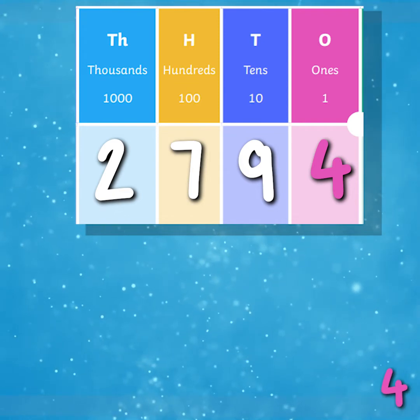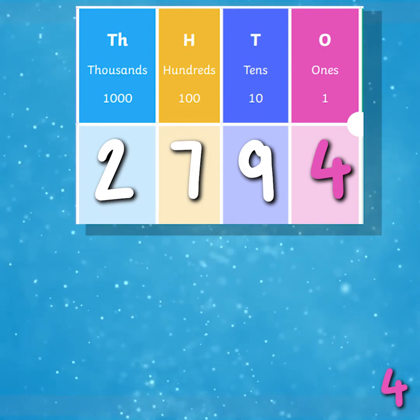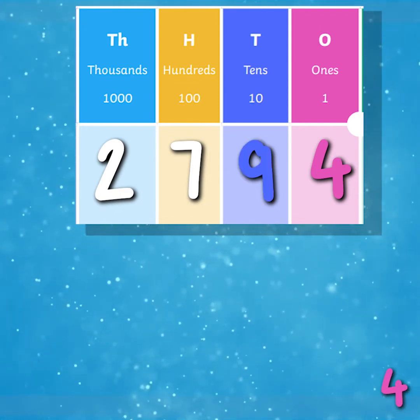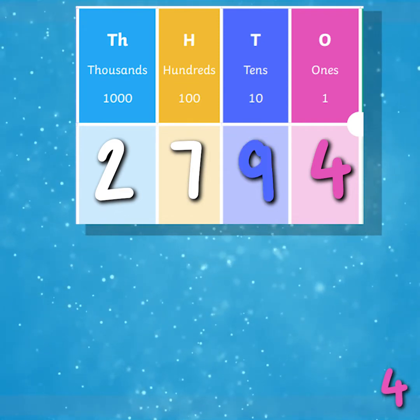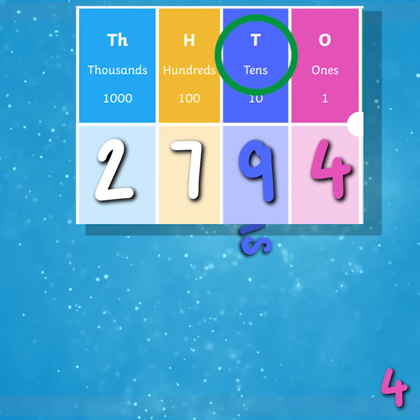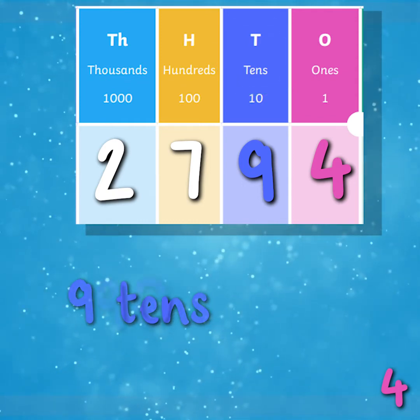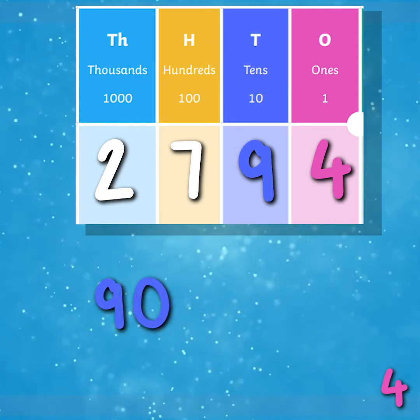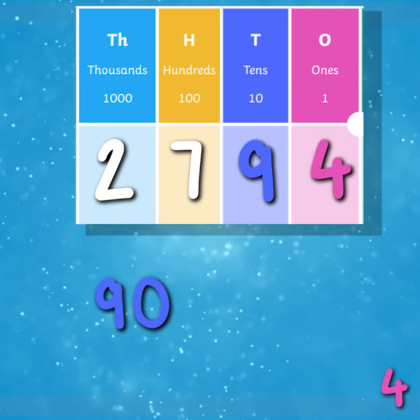What's the value of the digit nine in our number? We can see that nine is in the tens column, so nine lots of 10 is 90, so the value of the nine is 90.